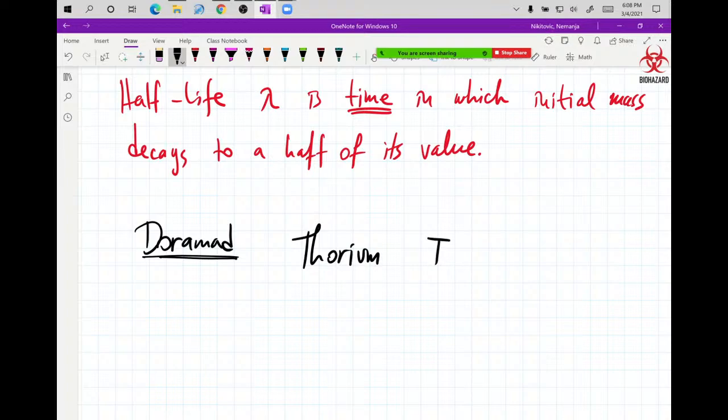So Doramad was using thorium isotope TH-229. And the half-life for it, half-life lambda is 7,340 years. That means that if you have a pound of thorium, you have to wait 7,340 years for it to decay down to a half a pound of thorium.